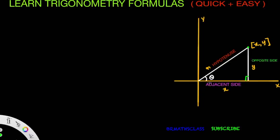So opposite side, adjacent side, and hypotenuse should now be clear to you. If I take this point, the length of the opposite side is Y, the length of the adjacent side is X, and the hypotenuse is R. Now the six trigonometric formulas are defined like this.